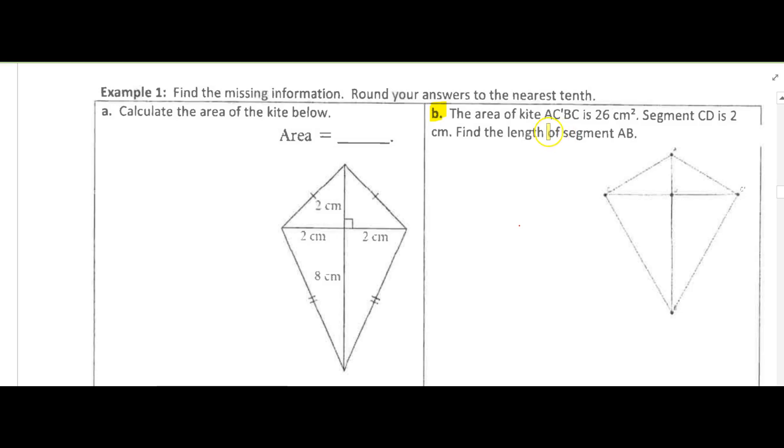In this one we're given that the area of kite AC'BC is 26 centimeters squared and segment CD is 2 centimeters, so we want to find the length of AB.